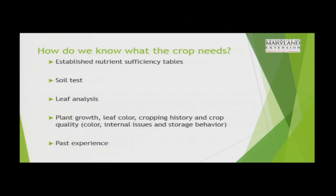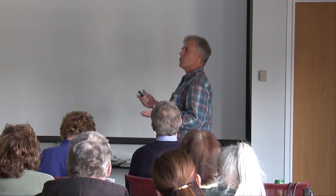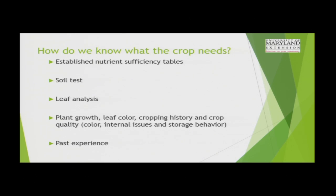So what will we be talking about? How do we know what the crop needs? I mentioned the sufficiency tables, and I'll be showing you some examples. They've been developed from years of university and independent research, primarily driven by the industry, because obviously if you're selling apples or peaches and there's some nutrient deficiencies, the product isn't going to be good for consumers. These are tables that have been developed, and it's a continuing process because as new varieties come out, their needs may be different.